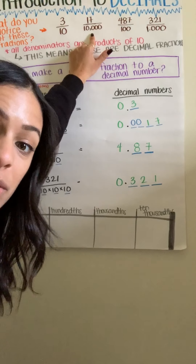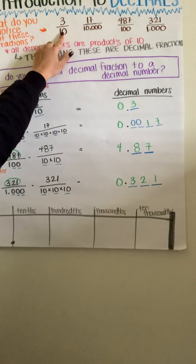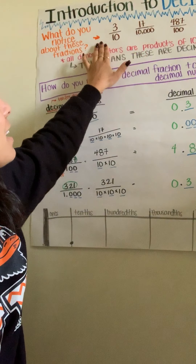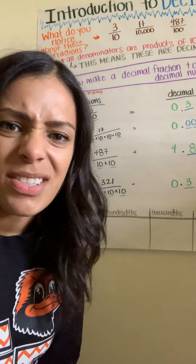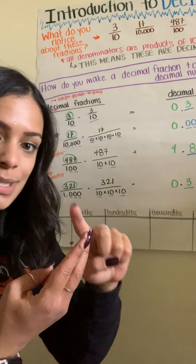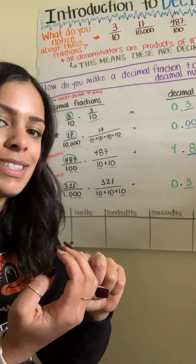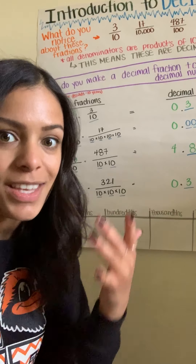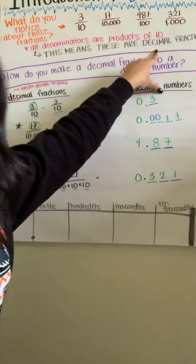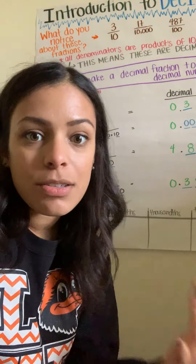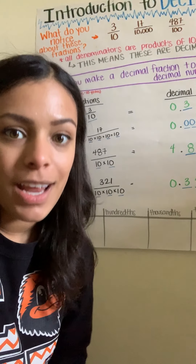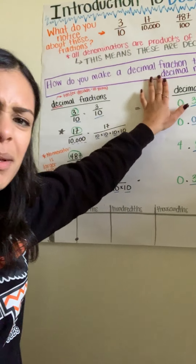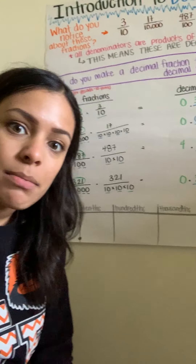A tenth is going to relate heavily to the place value charts we've been working with — ones, tens, hundreds, thousands, ten thousands, hundred thousands, and so on. That place value chart is going to play a huge role as we start working to convert these fractions into decimals. These are what we would call decimal fractions — fractions whose denominator is a product of 10, which means they can be converted into a decimal. Because all of these denominators have ones and zeros, we can make these into decimals.